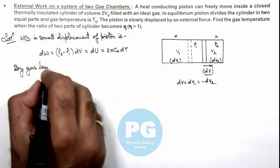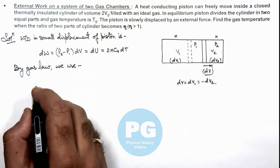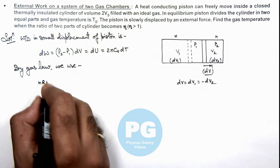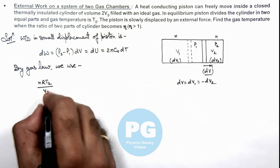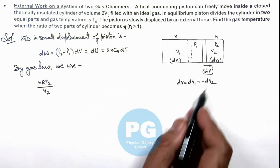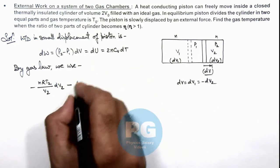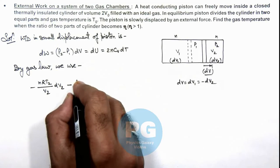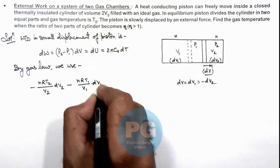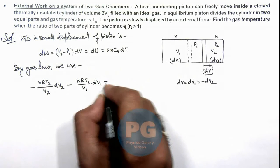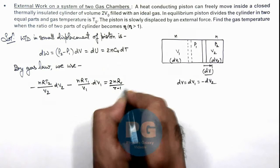By gas law, we use the pressure P₂ we can write as nRT₂ by volume of this part is V₂, multiplied by dV₁. dV we can write as dV₂, minus P₁ we can write as nRT₁ by volume V₁ multiplied by dV₁, is equal to 2nCᵥ. We can write as R/(γ-1) multiplied by dT.